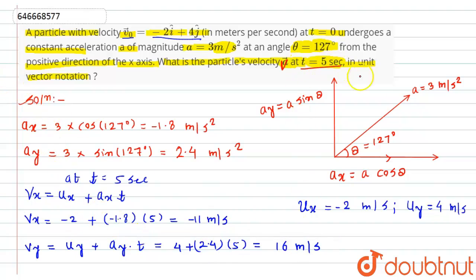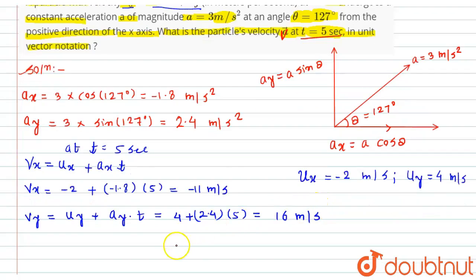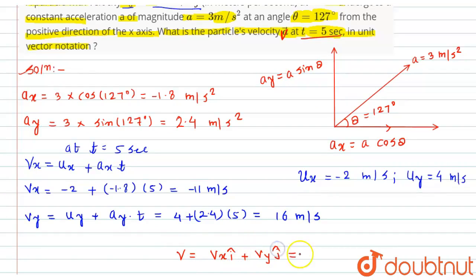So the velocity of the particle after time t = 5 seconds in unit vector notation can be written as v = vₓî + vᵧĵ = -11î + 16ĵ. This is our required answer and the required solution. Thank you.